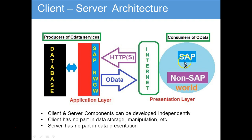If they have to enter SAP, they have to pass through this door or window which is called SAP Netweaver Gateway. SAP internally understands what the HTTP request contains, then processes the data, and sends the response back in the form of OData services to the outer world through the internet. The beauty of this architecture is that the development of the client and the server can be done independently, and the client does not take part in any data storage or data manipulation — only the server does that.